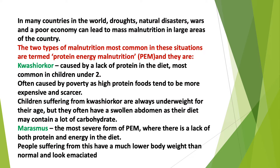In many countries in the world, droughts, natural disasters, war and a poor economy can lead to mass malnutrition in large areas of the country. The two types of malnutrition most common in these situations are termed protein-energy malnutrition, in short, PEM.